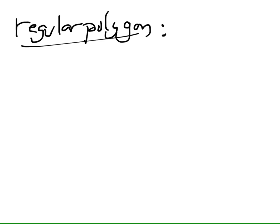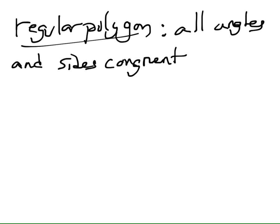The last vocab you need to know is something called a regular polygon. A regular polygon has all angles and sides congruent. So what's a really easy example of a regular polygon? A square. All four sides of a square are the same, all four angles are the same, right? That would be a typical regular polygon. If it's not regular, we call it irregular.